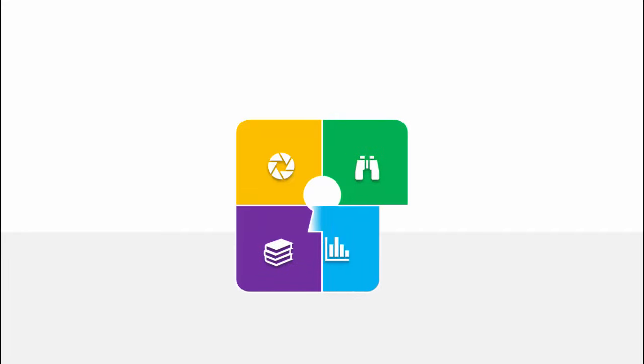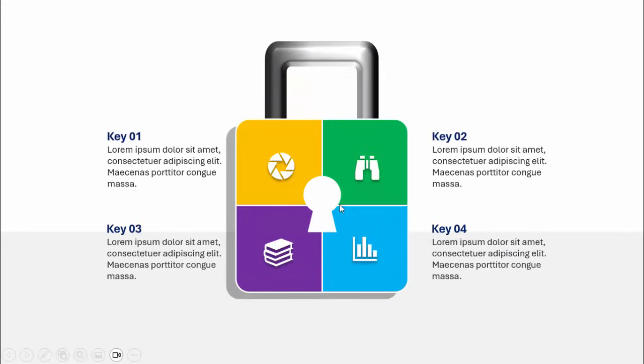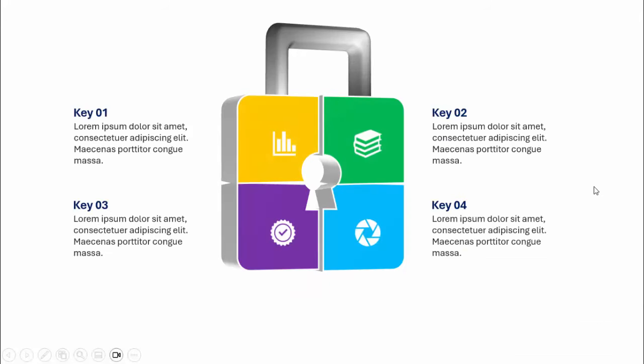In today's tutorial I'm going to show you how to create a four-options padlock infographic slide in PowerPoint. When I click it will show the first option, second, third, and fourth with different color combinations. I've added the shackle here which looks like a 3D effect, and you can add details of each text — key one, key two, key three, and key four. I've created one more slide where I've used a kind of 3D effect.